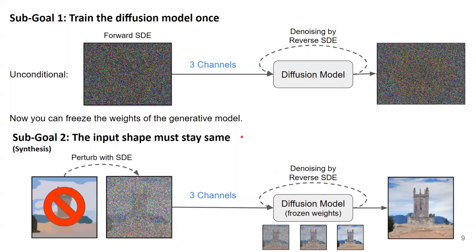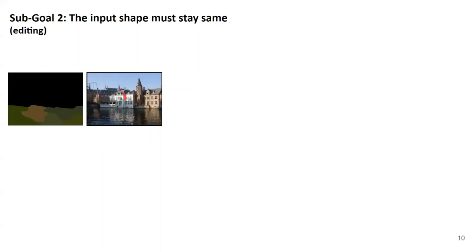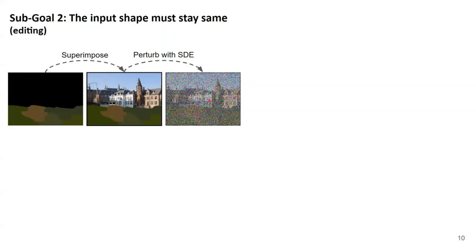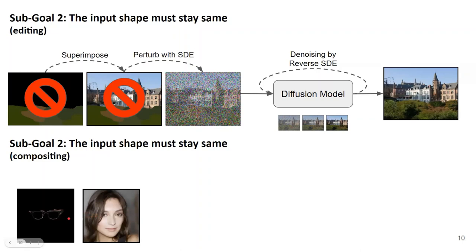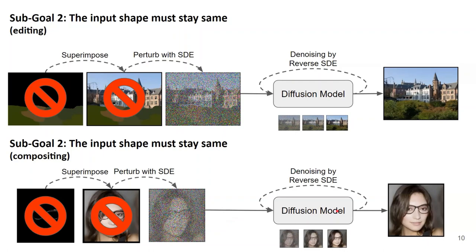For the editing task, you have your original image and a stroke-based input guide. You superimpose the guide on top of the original image, then noise that combined image — again only enough to lose fine details while retaining vague structural information. Discard the original two images, use only the resulting three-channel noisy image, and pass it through the diffusion model. For compositing, the process is similarly: superimpose two images, add noise, and use that image to generate realistic-looking results.